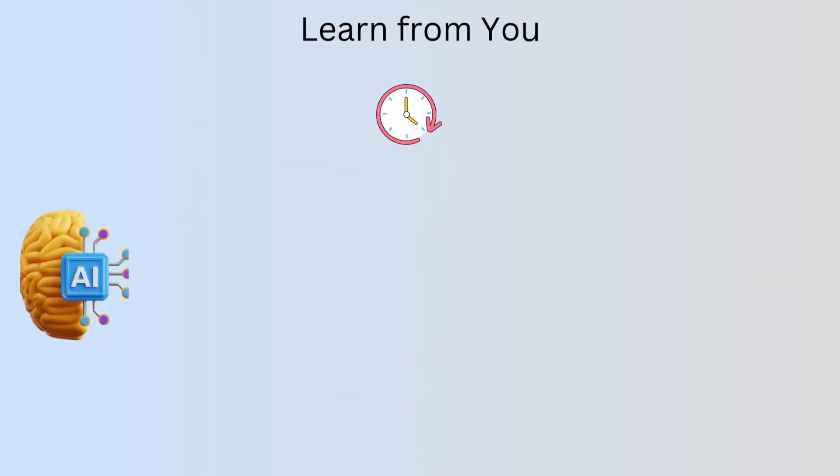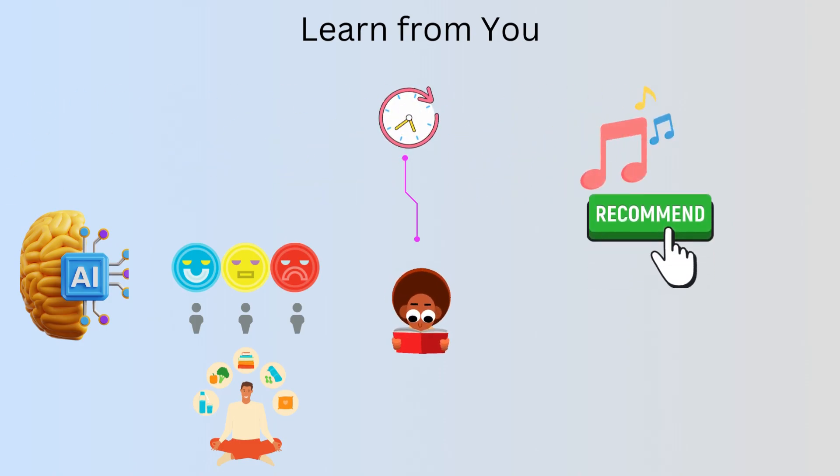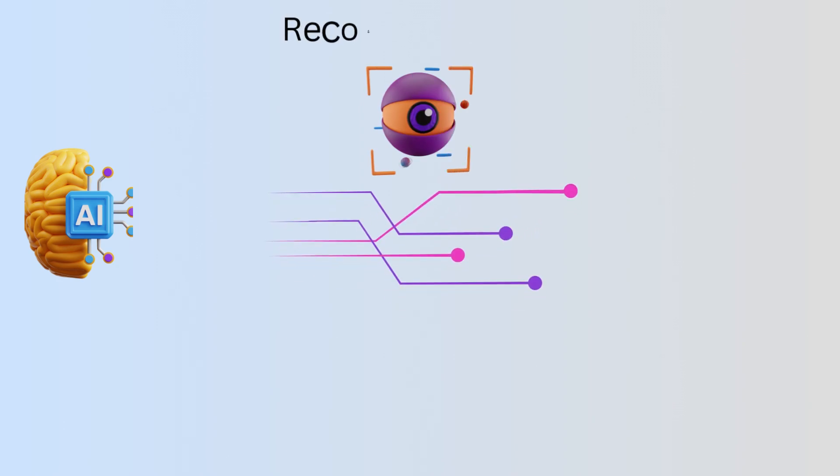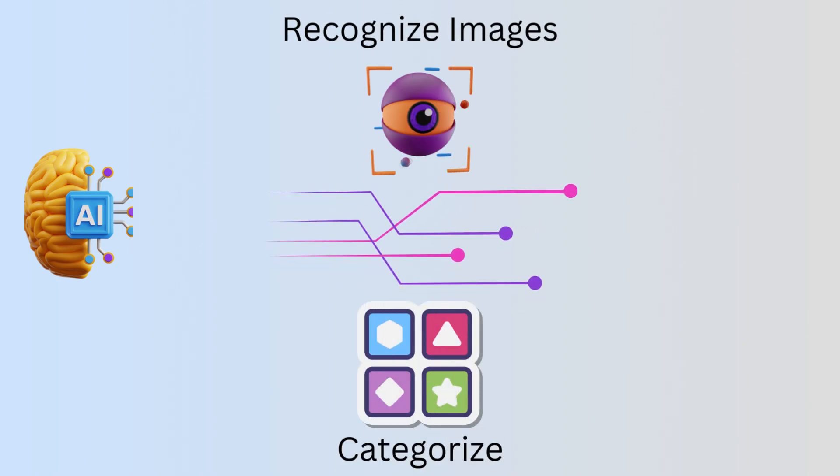Over time, it learns your preferences and habits, so it can recommend music you might like or remind you of appointments. It can also recognize and categorize photos you show it, like identifying pictures of dogs or cats.